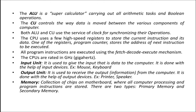Boolean AND operation: if both inputs are true, the output will be true. For example, A value is 1 or 0, B value is 1 or 0. In AND operation, the result is 1 or 0. Boolean values are either 0 or 1. ALU supports AND, NOT, and OR operations.